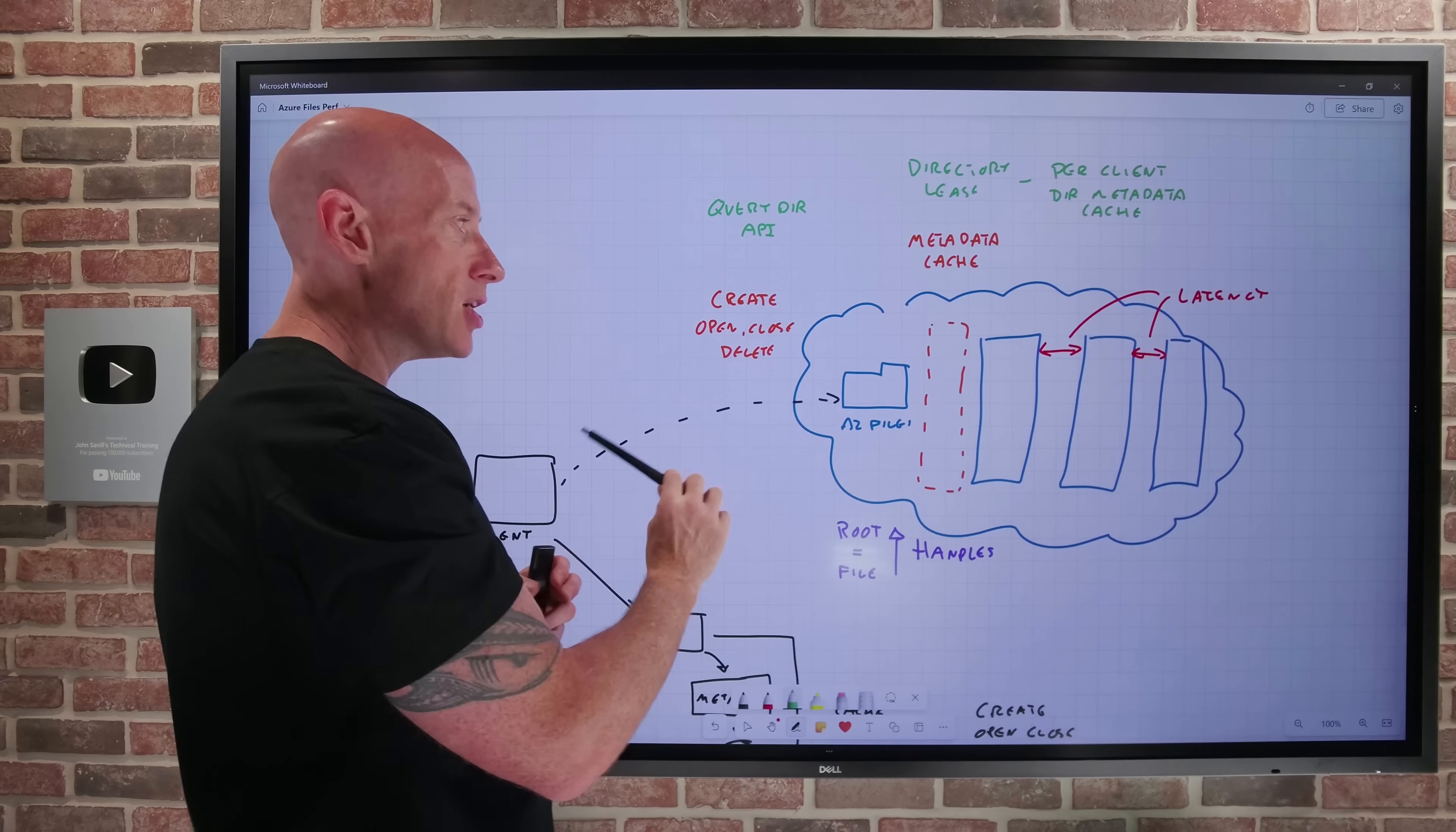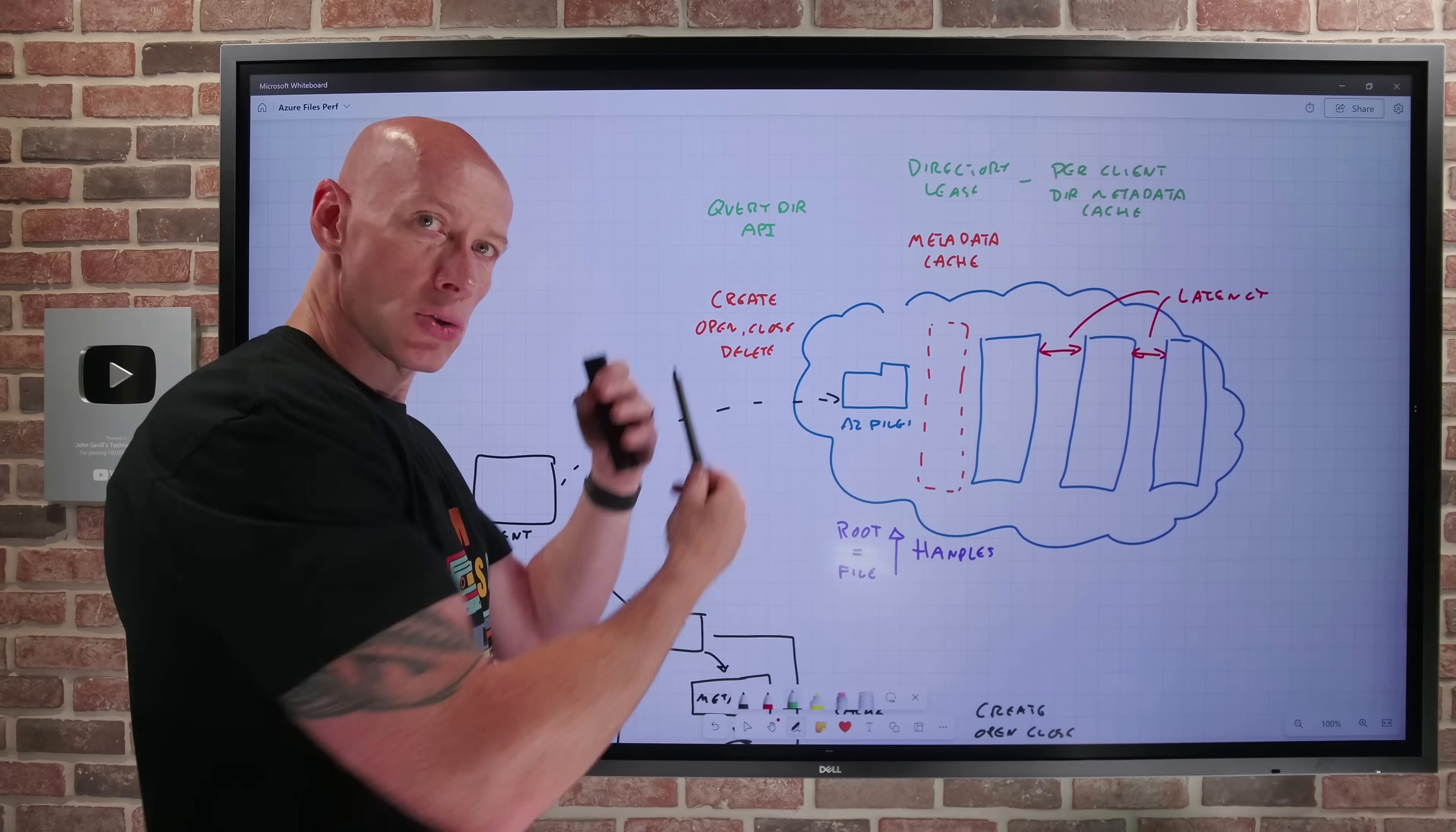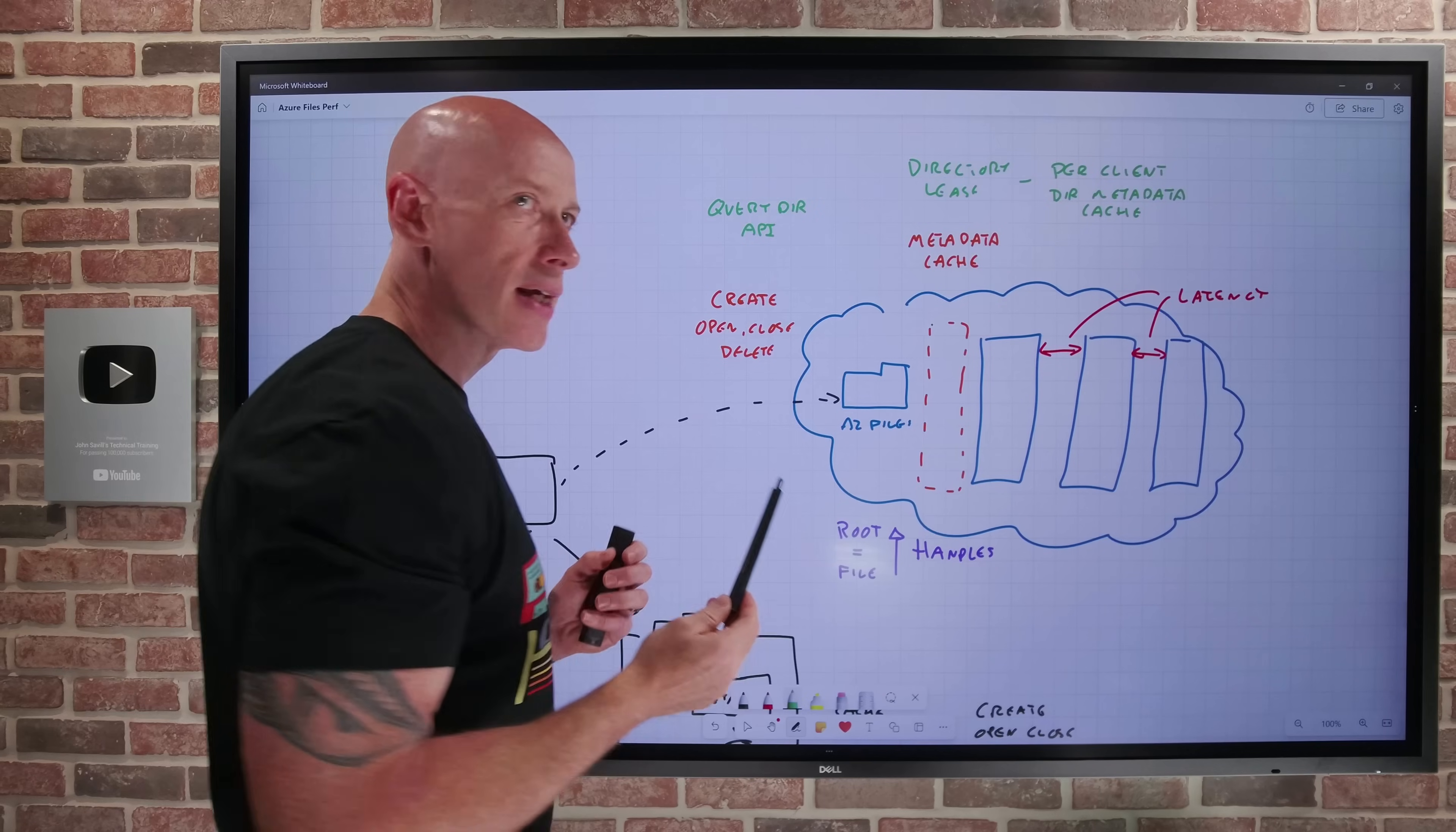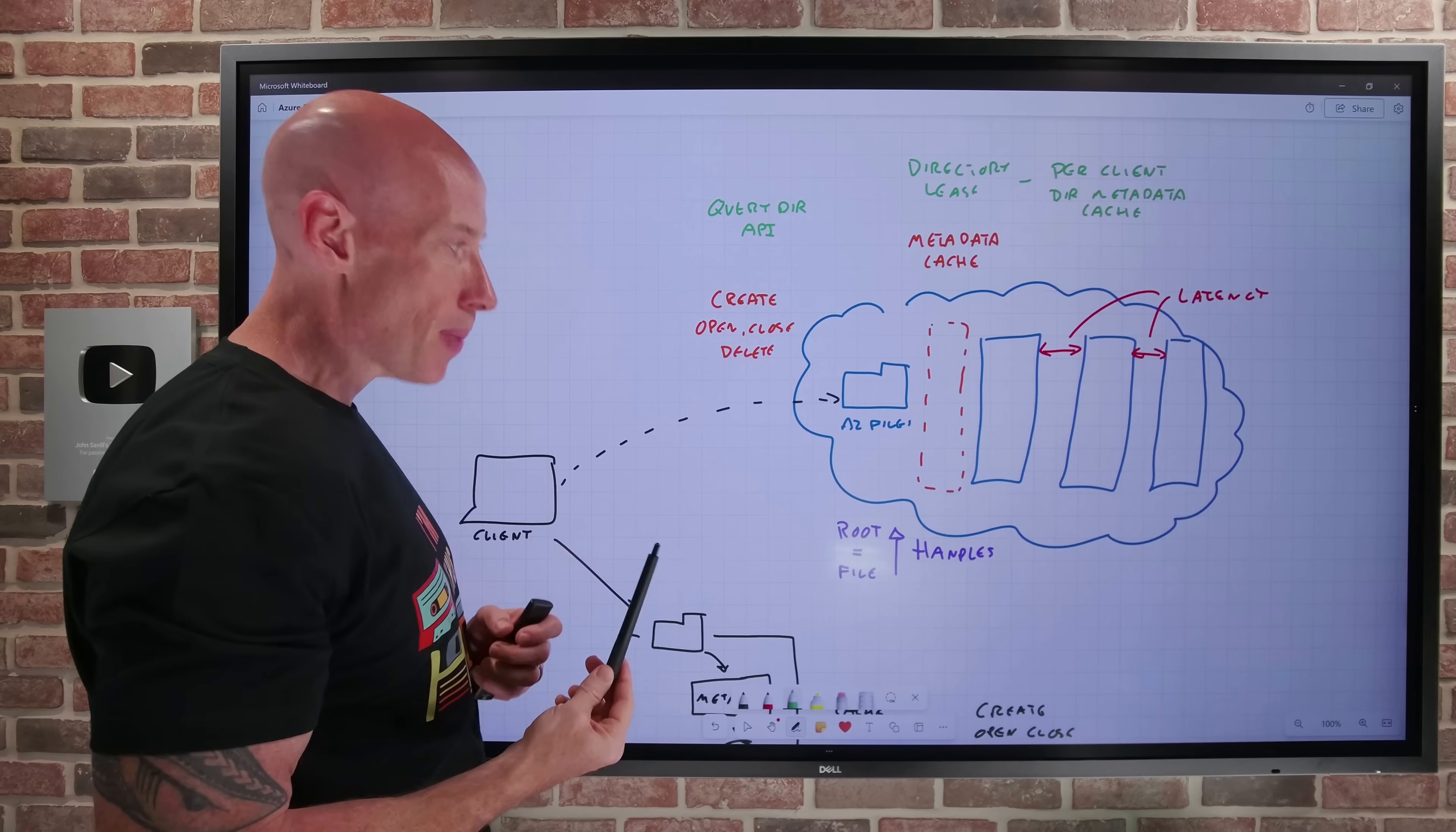So think of this working together. Hey, the metadata cache is about those create, delete, open, closes on the contents. The query directory API in this new directory lease, well, that's going to improve the performance of things like the directory listing. So together I get a huge benefit.